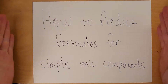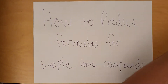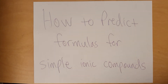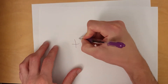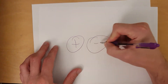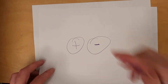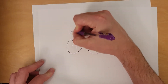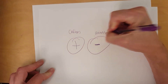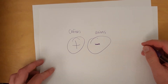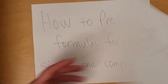Let's talk about how to predict the formulas for simple ionic compounds. As a reminder, an ionic compound is what you get when a positive ion attracts to a negative ion because opposite charges attract. So cations and anions are a necessary part of any kind of ionic compound.